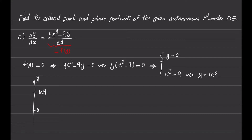The first region is for values of y less than zero, and we can pick y equals negative one and find the sign of f(-1). In the numerator and denominator we get a positive value, and since it's positive we will have an upward arrow in this region.